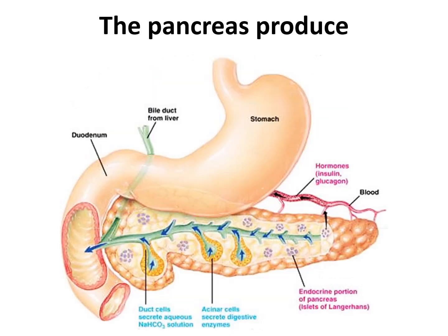The pancreas produces exocrine secretions — that is, pancreatic juice from the acinar cells — that enters the duodenum, and endocrine secretions, which are glucagon and insulin from the pancreatic islets, or the islets of Langerhans, that enter the blood.